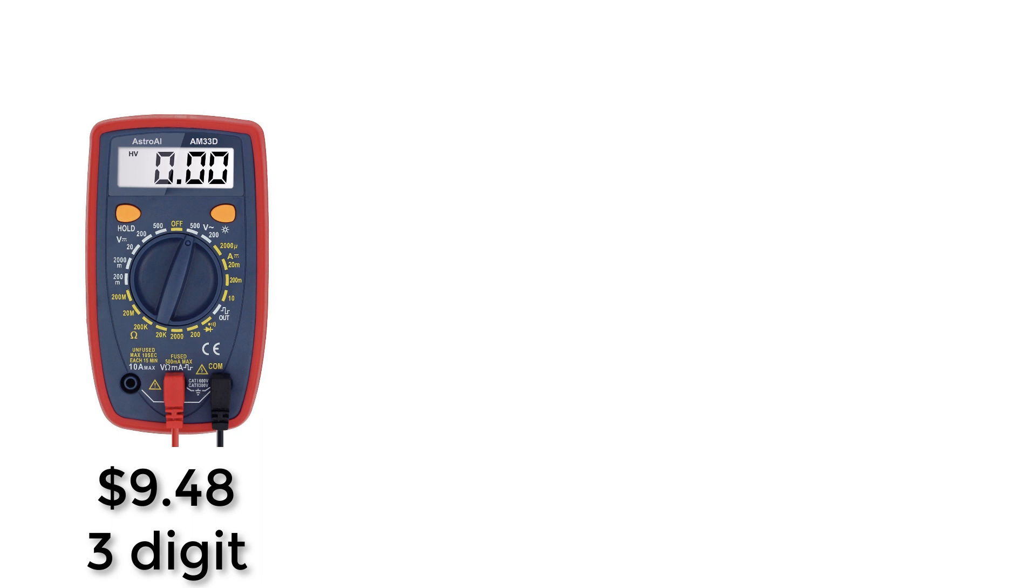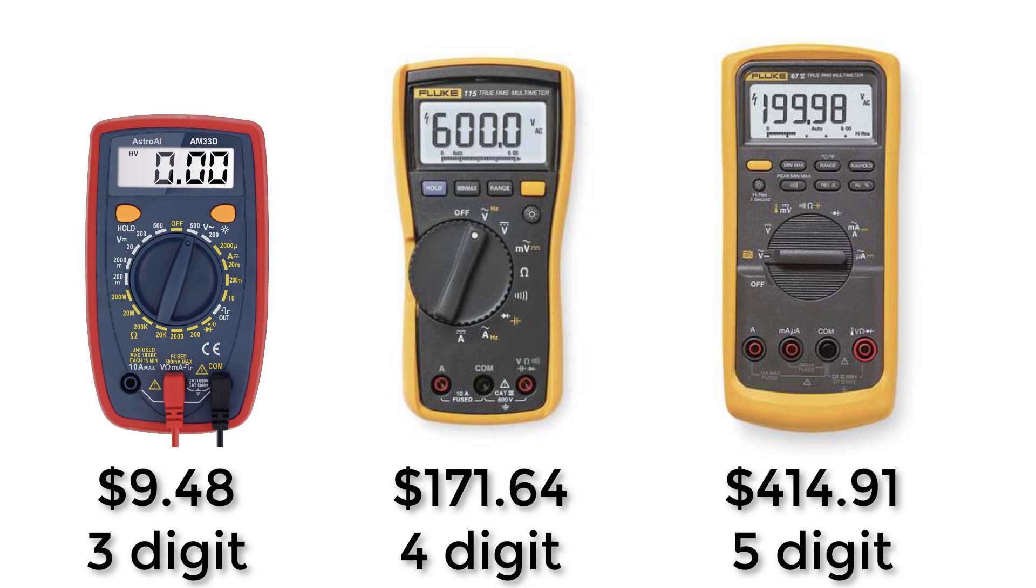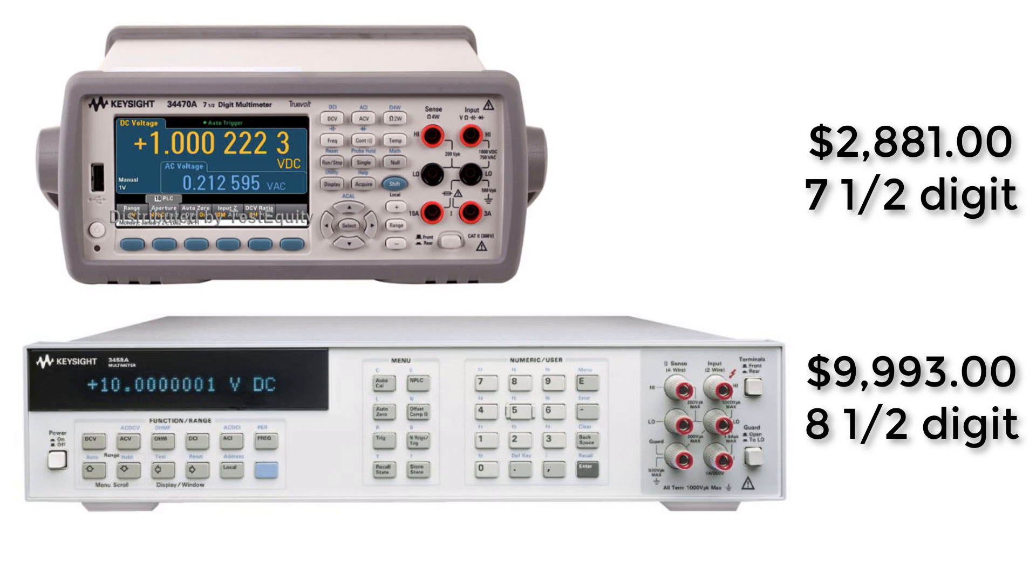For resistor measurement, if you spend five times as much, you can get another digit of accuracy. Spend another five times more and you can get desktop digital multimeters that are more accurate. More money roughly translates to more accuracy, but that measurement is never exactly the true value. There is always some deviation, some uncertainty.